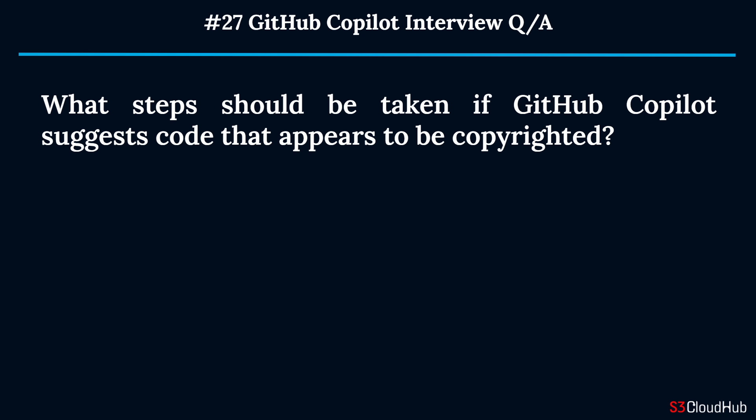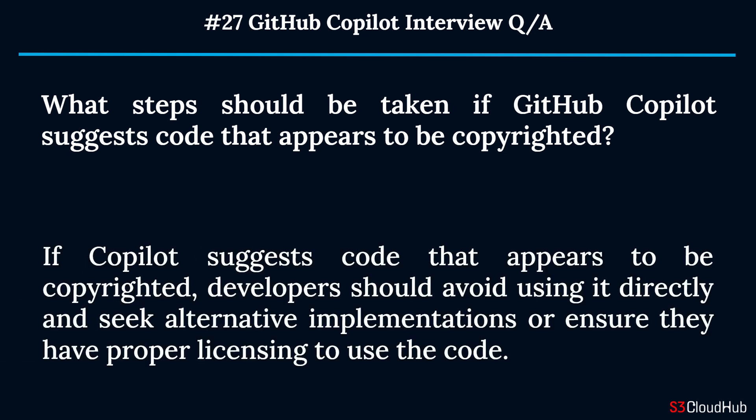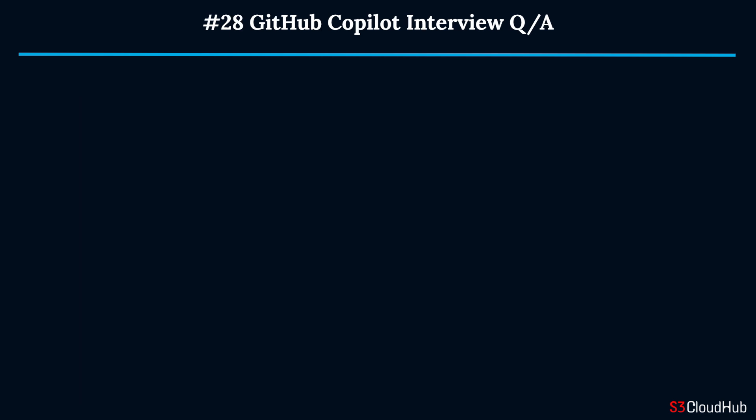Question twenty-seven: What steps should be taken if GitHub Copilot suggests code that appears to be copyrighted? If Copilot suggests code that appears to be copyrighted, developers should avoid using it directly and seek alternative implementations, or ensure they have proper licensing to use the code.